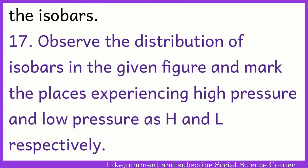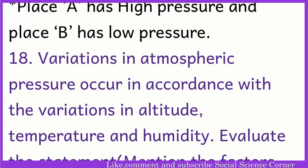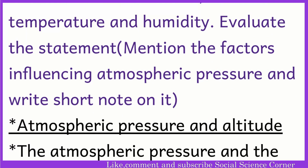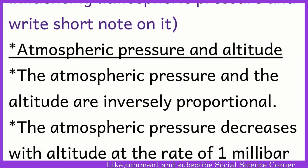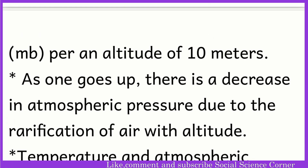By observing the distribution of isobars in a given figure and marking places experiencing high pressure and low pressure as H and L respectively: Place A has high pressure and place B has low pressure. Variations in atmospheric pressure occur in accordance with variations in altitude, temperature, and humidity. The factors influencing atmospheric pressure: atmospheric pressure and altitude are inversely proportional. Atmospheric pressure decreases with altitude at the rate of 1 millibar per 10 meters of altitude.